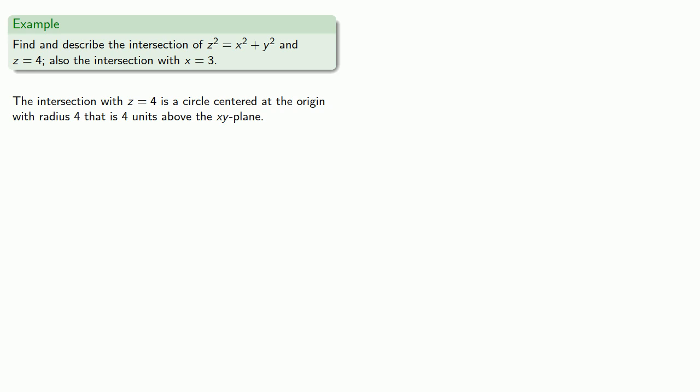With x equals 3, equals means replaceable, giving z squared equals 9 plus y squared. It's useful to think about our perspective. Our z-axis is going to be the vertical axis. The y-axis is going to be the horizontal axis. So this is going to be a hyperbola opening upward. Because x equals 3, we're actually going to be 3 units away from the y-z plane.